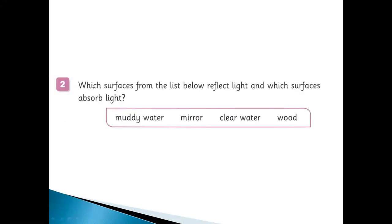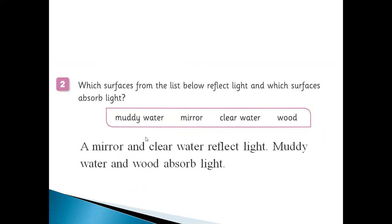Question number two: which surfaces of the list below reflect light and which surfaces absorb light? A mirror, water, and clear water reflect light. Muddy water and wood absorb light. It is not reflecting.